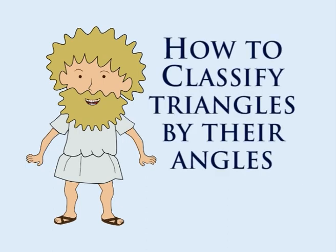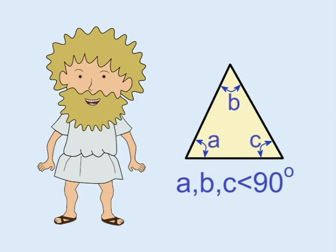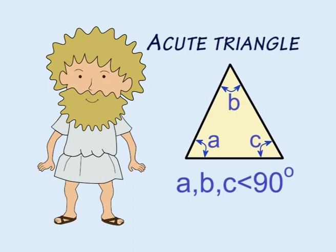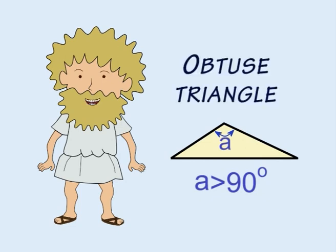As with angles, triangles can be classified by the types of angles they have. A triangle in which each of the internal angles is less than 90 degrees is an acute triangle. A triangle that has one angle greater than 90 degrees is an obtuse triangle.